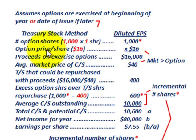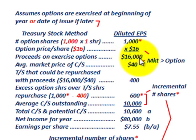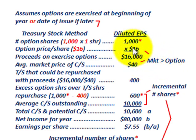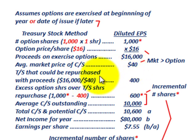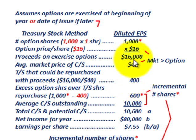The option price per share is $16. So the proceeds on exercise of all options would be $16 times 1,000 options, equaling $16,000. The average market price of common stock is $40 per share, which is greater than the option price of $16. For the treasury stock repurchase step, we take the $16,000 proceeds divided by the $40 market price per share, giving us 400 shares that could be repurchased.